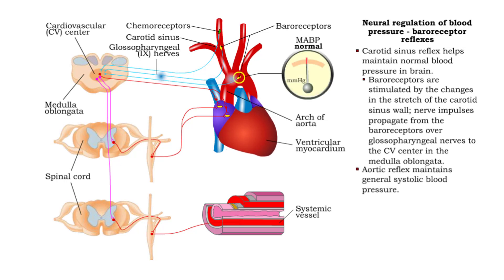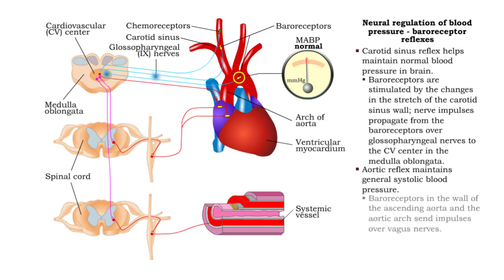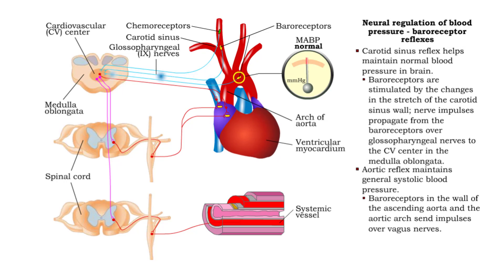The aortic reflex, which maintains general systolic blood pressure, works in a similar manner. Stretches in the wall of the ascending aorta and aortic arch send impulses over vagus nerves to the cardiovascular center.